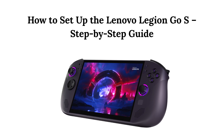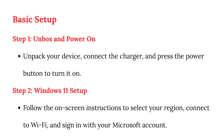How to Set Up the Lenovo Legion Go S: Step-by-Step Guide. Basic Setup, Step 1 — Unbox and Power On. Unpack your device, connect the charger, and press the power button to turn it on.